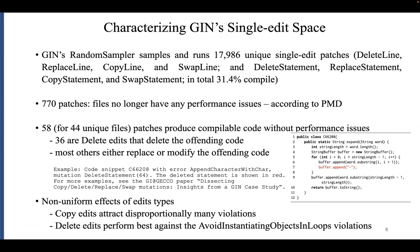Of these 18,000 unique patches, 770 interestingly result in files that no longer show any performance issues whatsoever — which is a good start. Among these, a large percentage did not compile. Initially of these 18,000, roughly one third actually compiled, which is a good number because it shows that code is not as fragile as one might intuitively assume. This mirrors other previous studies over the last few years performed by others as well.